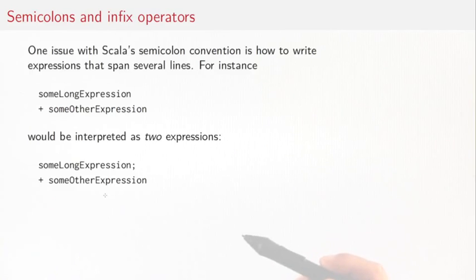Being able to omit semicolons at the end of lines is very convenient, but there's one issue with it. How would you write an expression that spans several lines? To see the problem, consider this expression here, some long expression, then it's continued on the second line with plus some other expressions. That would actually be interpreted by the Scala compiler as two expressions. The first expression is this some long expression, then it would be the implied semicolon, and then comes plus with the other expression.